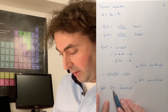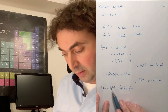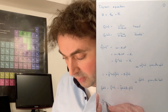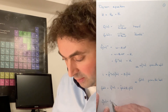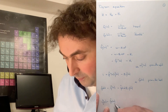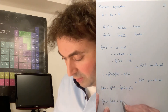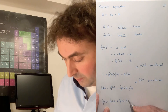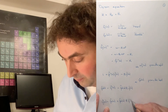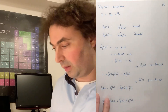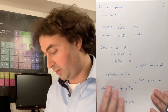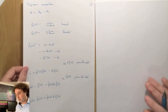We actually want to know what our full Green's function is, and it is equal to G0 plus G0 H1 G. I should be careful because these are not yet Green's functions — these are the Green's operators. So this is on the operator level.